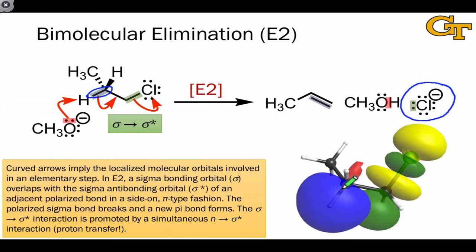In this key interaction, just as in beta elimination, the overlapping orbitals are aligned with their axes parallel. And this is pi-type orbital overlap.